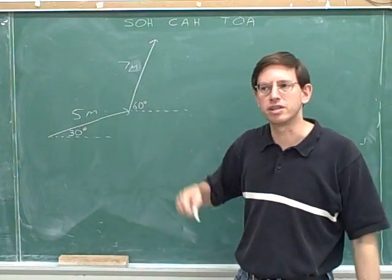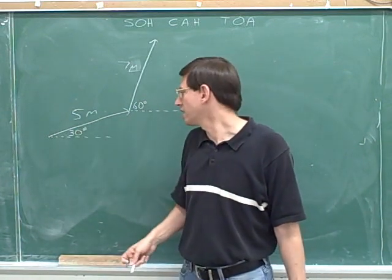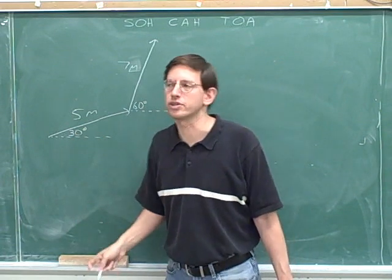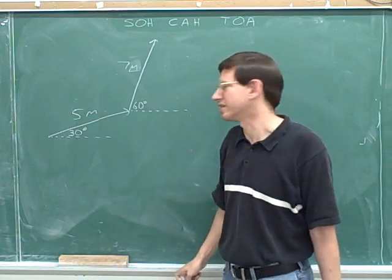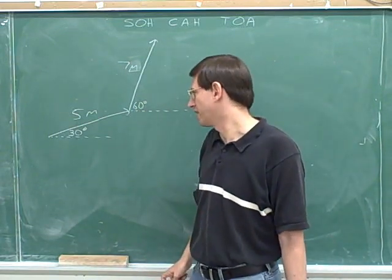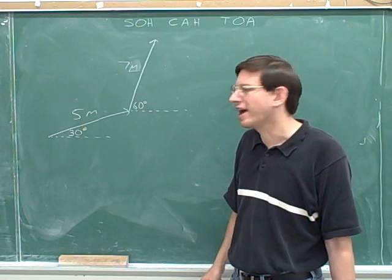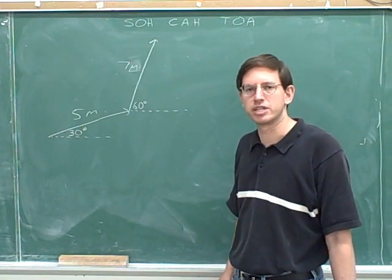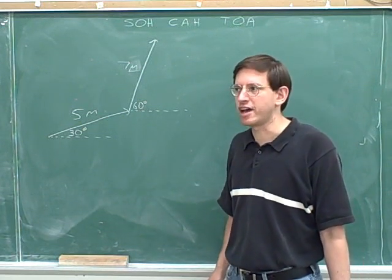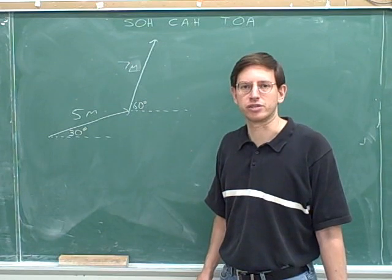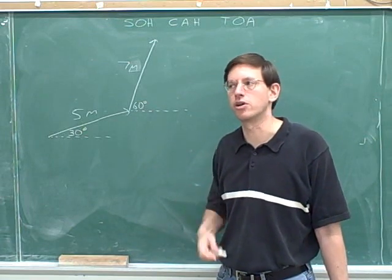Let's go back to a problem we considered near the beginning of these videos. An individual walks for 5 meters in a direction 30 degrees above the horizontal, and then walks for 7 more meters in a direction 60 degrees above the horizontal. What we want to figure out is what was this person's total displacement — how far is their final position from their original position, or what is their overall displacement?